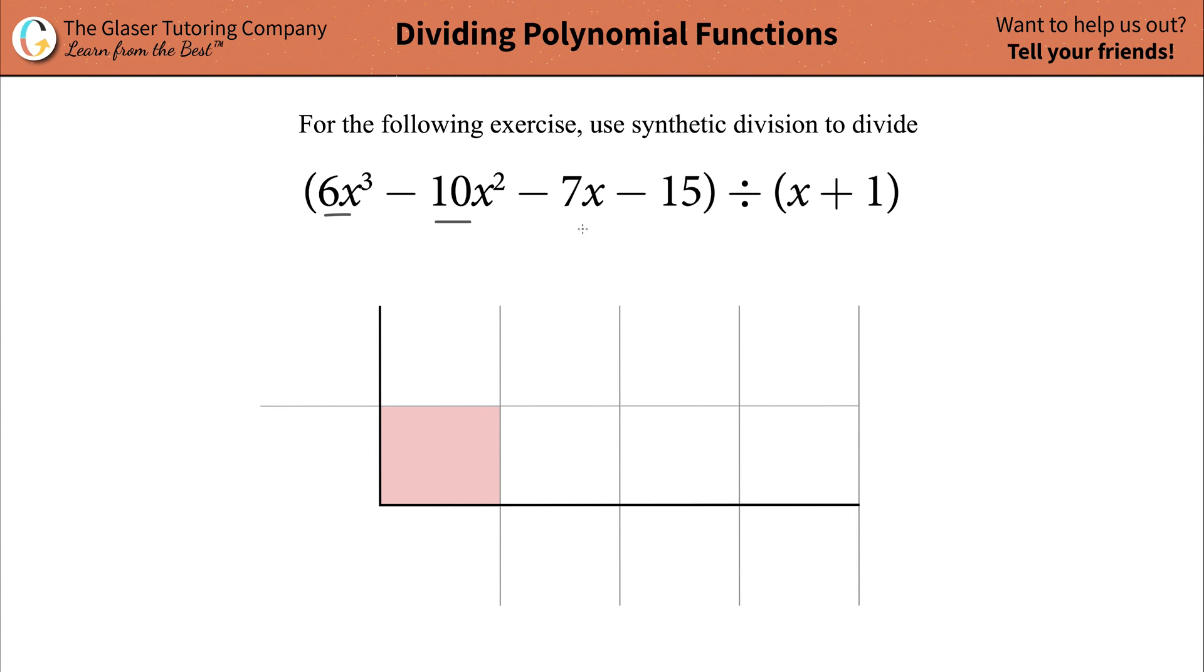Plug in the coefficients here into the row on the top. Positive 6, you got a negative 10, negative 7, and then a negative 15. Easy enough.